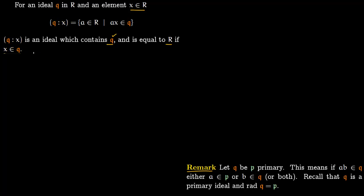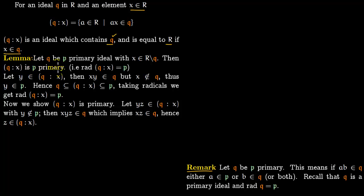The first lemma we want to discuss is this: let Q be a P-primary ideal where X lies in ring R but does not lie within Q — so X lies outside the ideal Q. Then Q/x is P-primary. This is what we want to show.